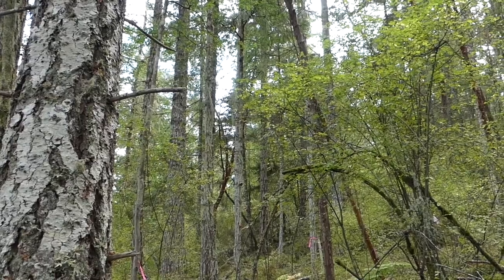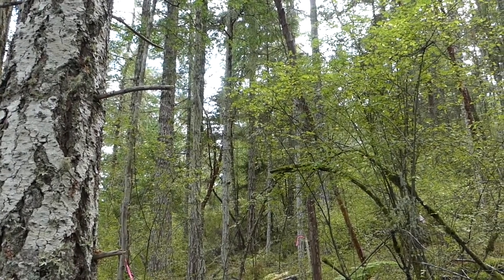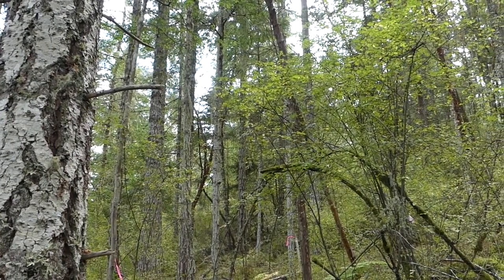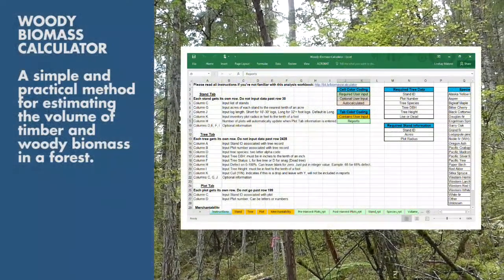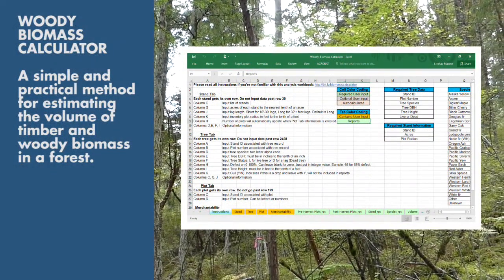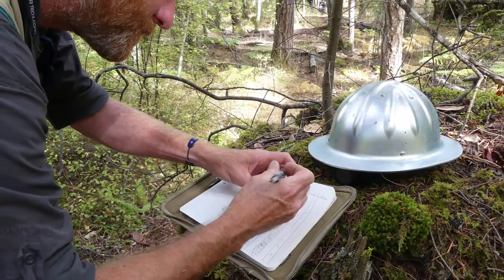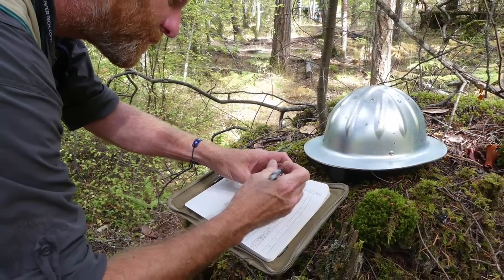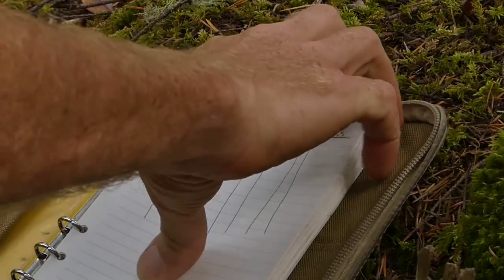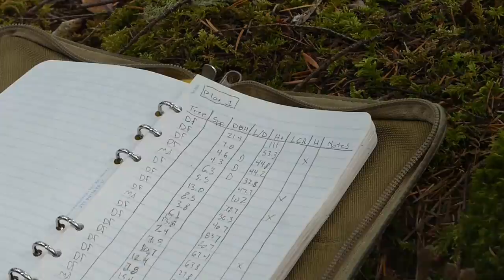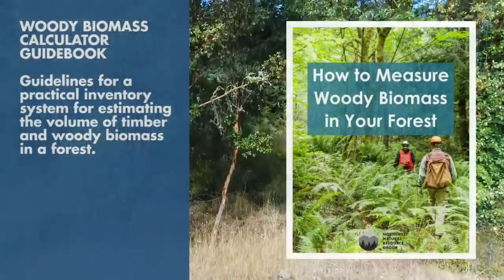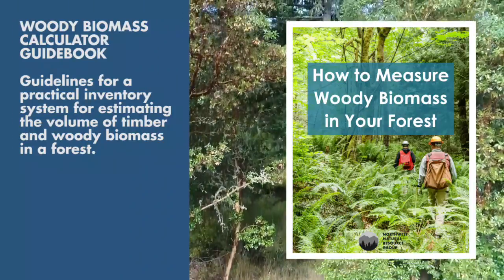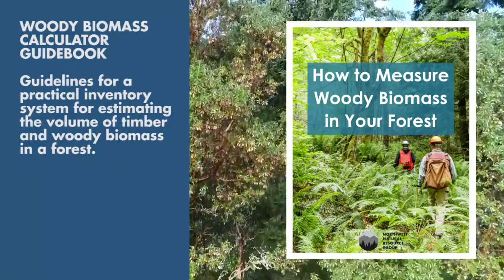Once you've recorded the species, diameter, height, and status of each tree in your inventory plot, you'll have the basic data you need to start using the Woody Biomass Calculator. If you have the time, there are a number of optional pieces of information you can record about each tree in your plot, such as age, live crown ratio, and percent defect. Read through the Woody Biomass Calculator Guidebook to learn more about those measurements and how to input all of your inventory data into the Woody Biomass Calculator.